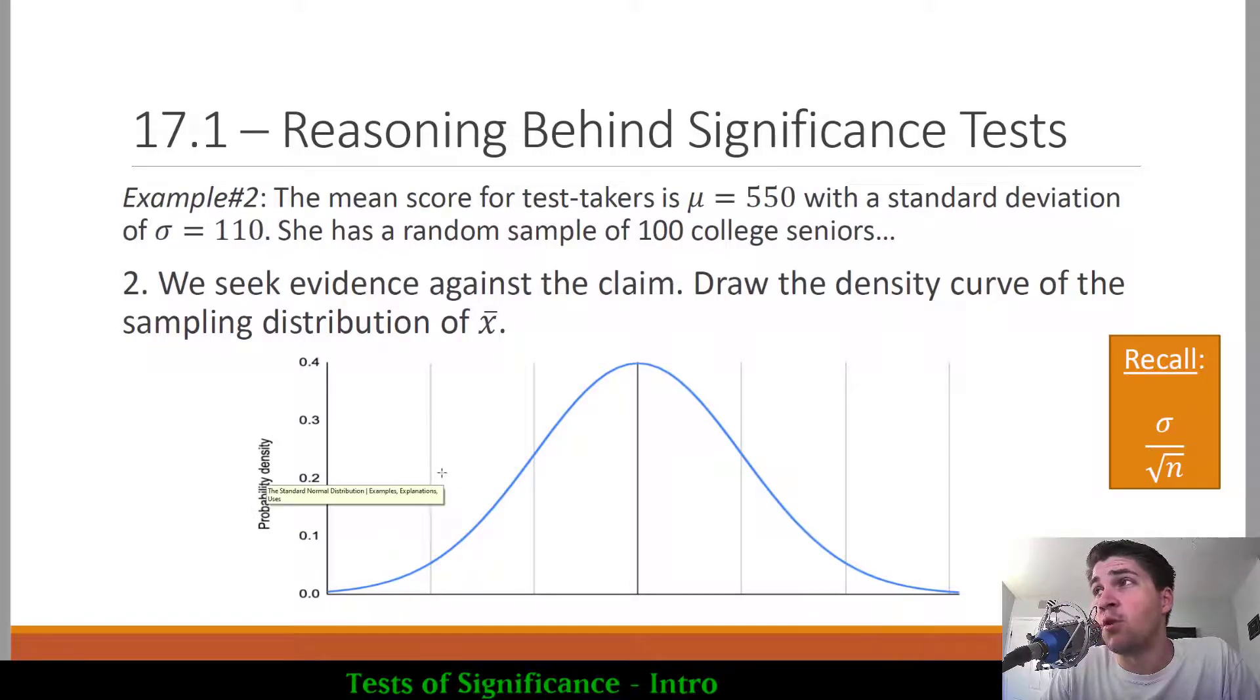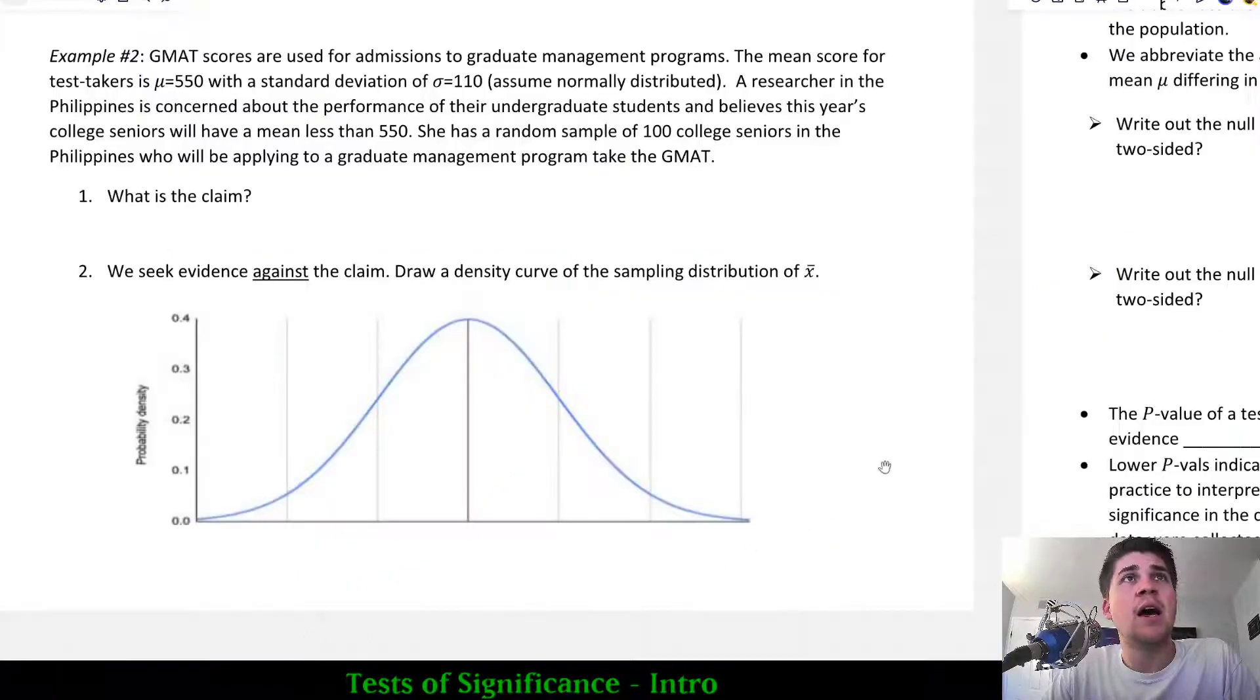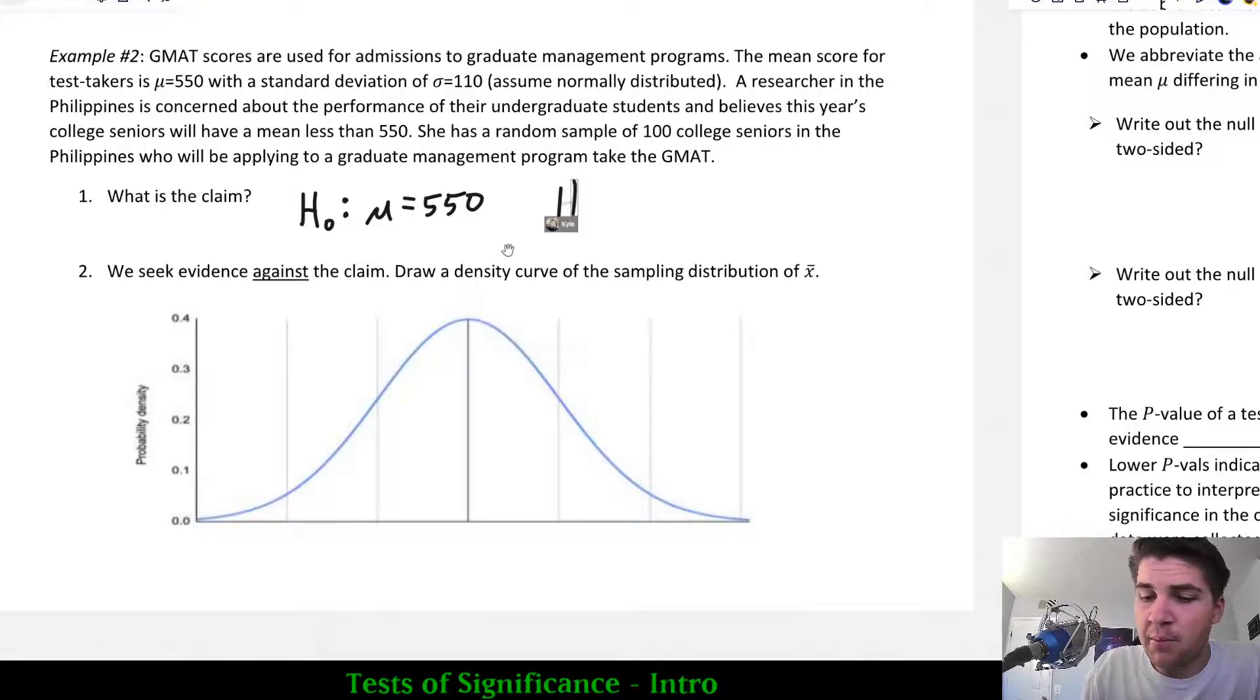And that's actually what's referred to as the null hypothesis. Let me move over to the notes so we can take this. I'm just going to write this for now and talk a little bit about what it means later. H sub zero colon mu equals 550. And this is the assumption, the claim about the population at hand.